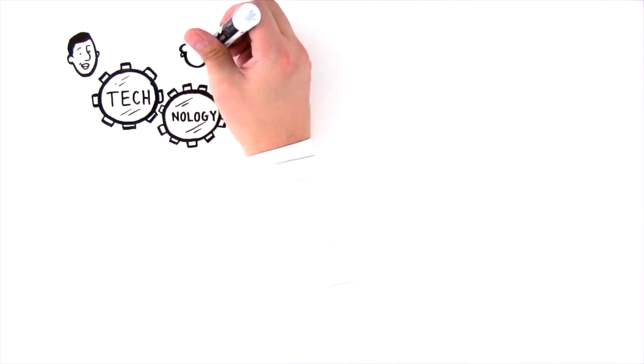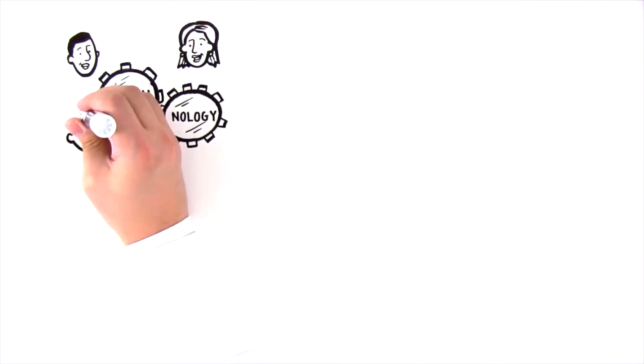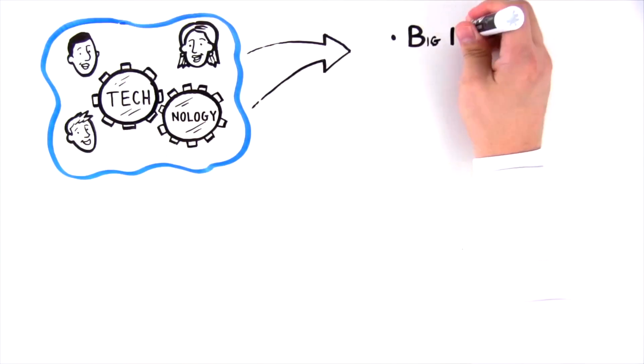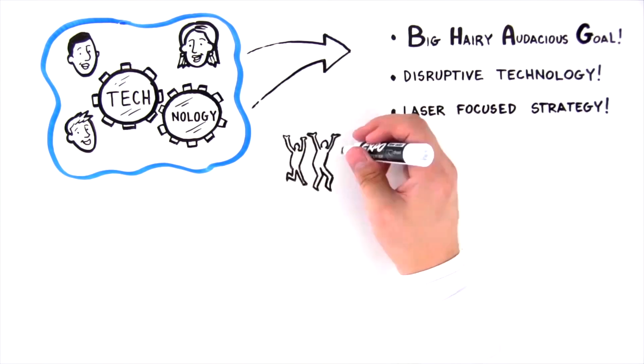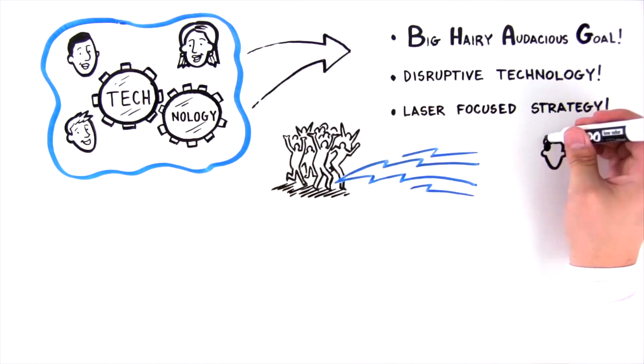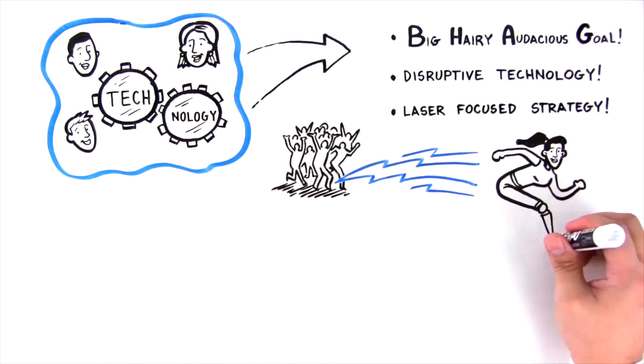the most successful and disruptive organizations consist of a small nucleus of people with a BHAG, a disruptive technology, and a laser-focused strategy. Today's innovative machine builders and robotics trailblazers are leaping ahead of the competition by thinking big and acting nimbly.